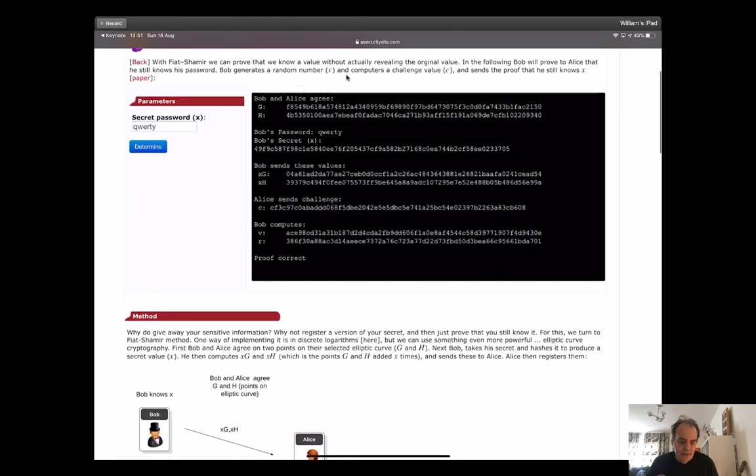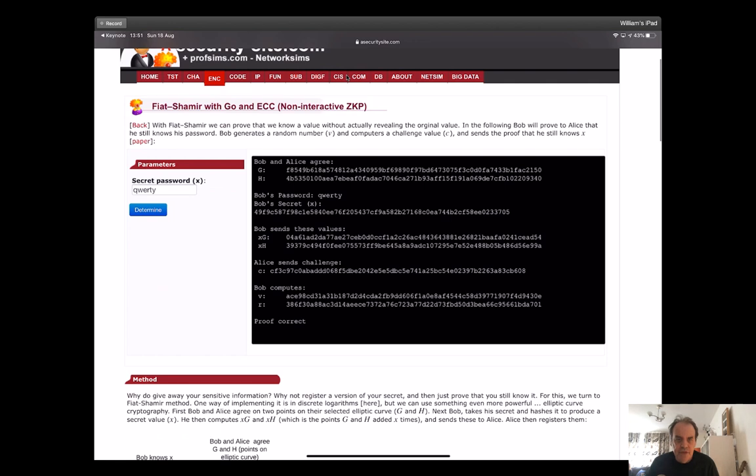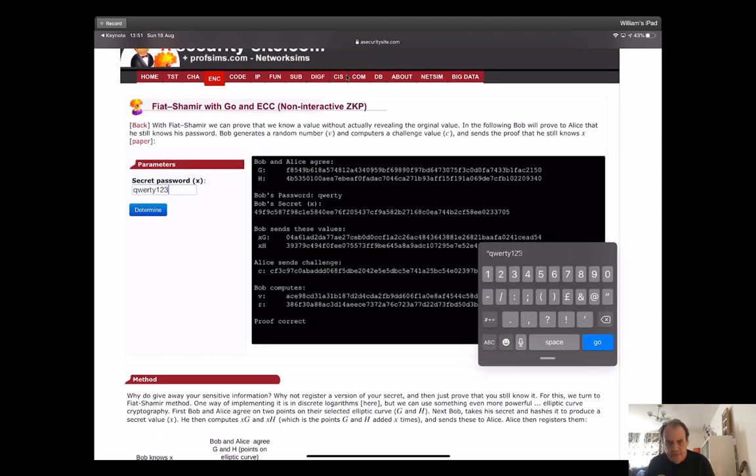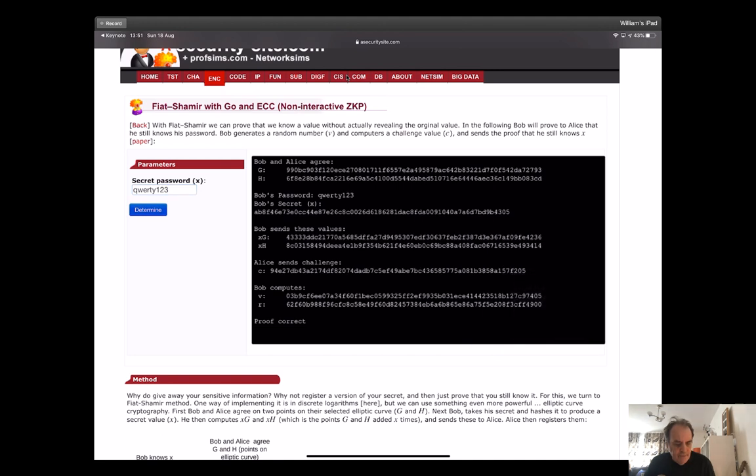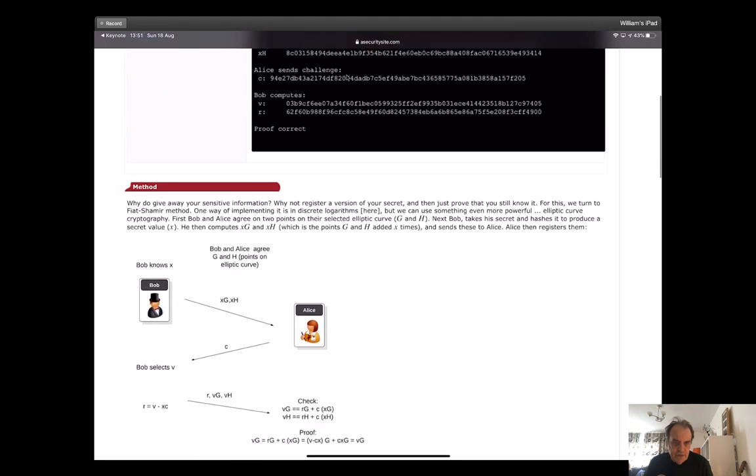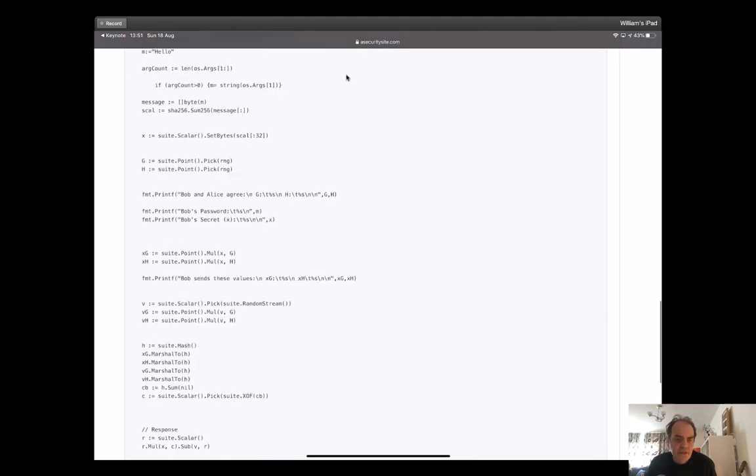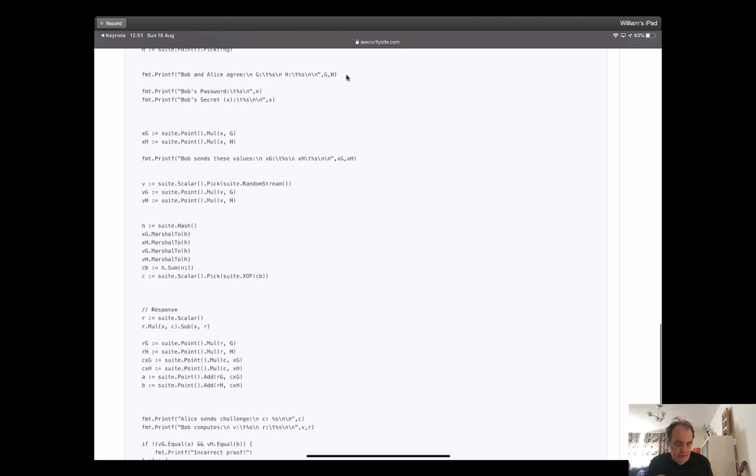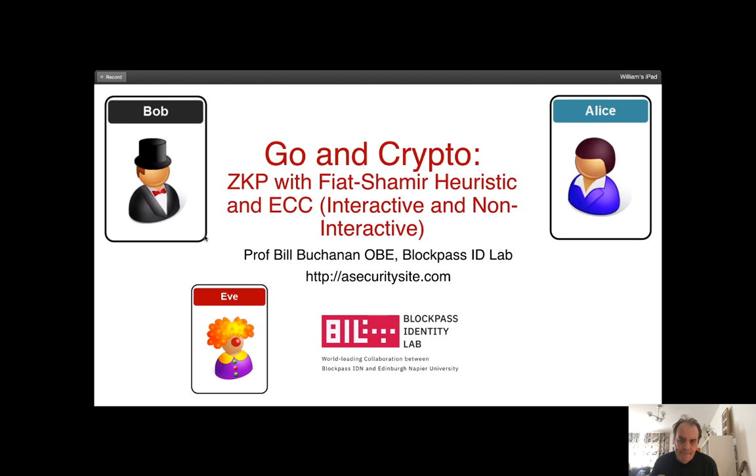So now let's look at some code that implements this. We'll just try a different password here. What we should see is that the password is converted into an x value there and then I will calculate our values here. The code that we've used is the code that we saw before. We can see here that this is how we create the non-interactive proof. That's been an introduction into zero knowledge proof with the Fiat-Shamir heuristic and using elliptic curve cryptography.